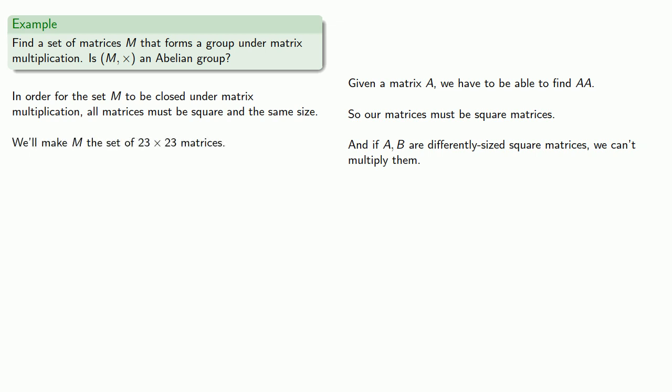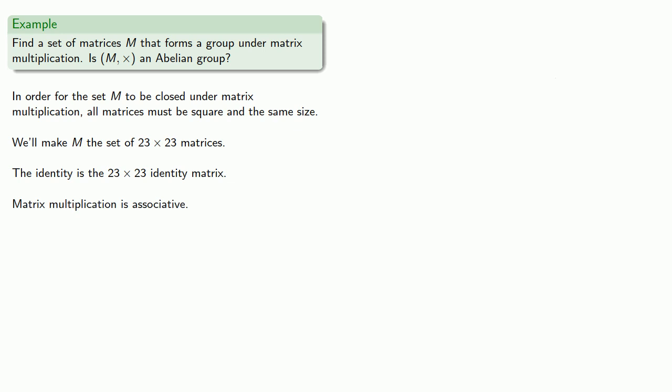We do need to check our other group requirements. So there is an identity matrix, it's the 23 by 23 identity matrix, and matrix multiplication is associative. So that meets some of our group requirements. Now the important thing to remember is that in order for M to be a group, every element must have an inverse. But not all matrices are invertible, so we'll limit ourselves to invertible matrices.